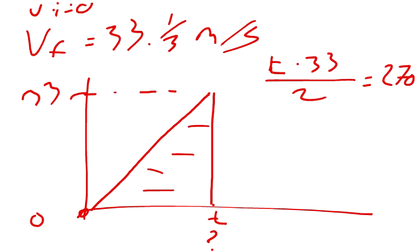Multiply by 2: T times 33 equals 540. Divide by 33: 540 divided by 33 equals 16.25. The time is 16.25 seconds.